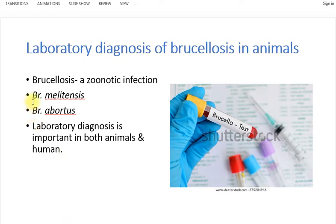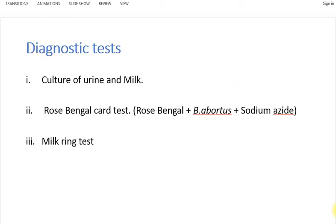The two common species which can be transmitted from animals to human beings are Brucella melitensis and Brucella abortus. Lab diagnosis has to be done in both animals and humans. In the previous lecture we studied the lab diagnosis in humans; today we will study the lab diagnosis of brucellosis in animals.